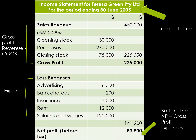This is what an income statement looks like. We have the title and the date — very important to any financial statement. At the beginning, you'll always see your sales revenue as the first item, then you take away your cost of goods sold. That gives us the gross profit, which is your profit purely from selling goods and services. Then you take away all your other expenses that you have regardless of selling, and you finally get the net profit at the end.